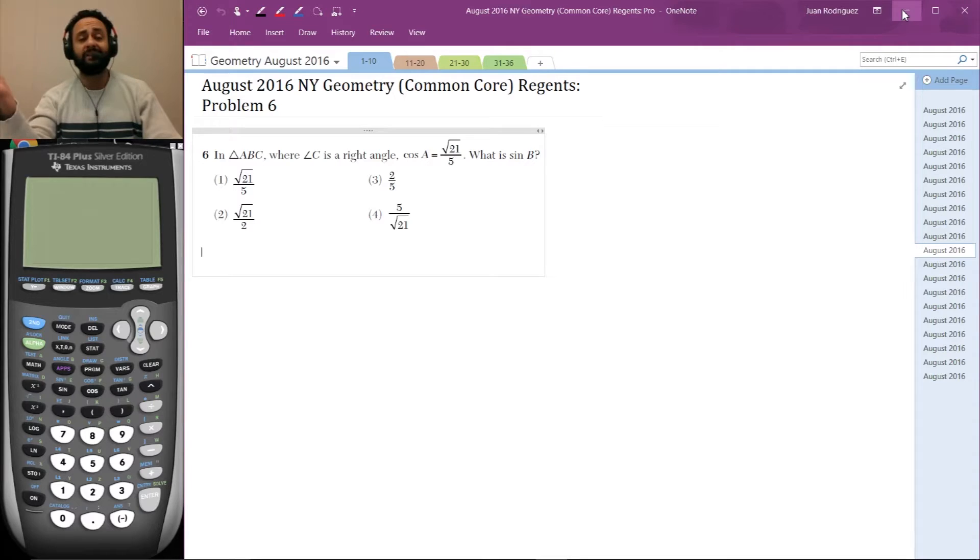If you want to access these exams, go to nysedregions.org and click on the appropriate tabs. The problem states: In triangle ABC, where angle C is a right angle, cos A = √21/5. What is the value of sin B? There are a few answers with some radicals.